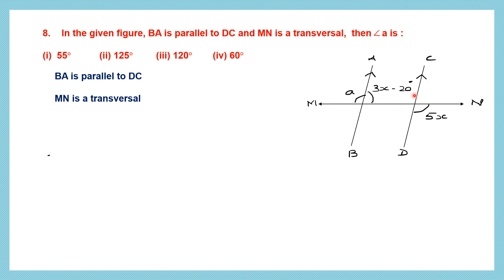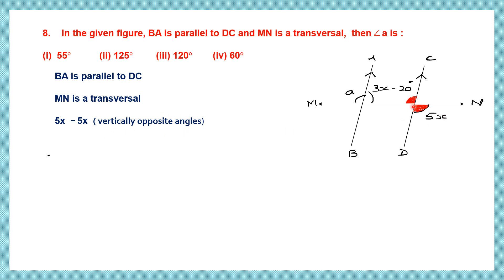We can also say A and 5X are alternate exterior angles and are equal — but again both are unknown. So first we need to find the value of X. We take the angle vertically opposite to 5X. That angle is also 5X because vertically opposite angles are equal. Now we can relate this 5X to angle 3X minus 20 degrees as co-interior angles.